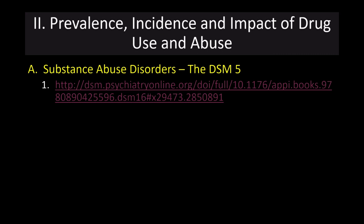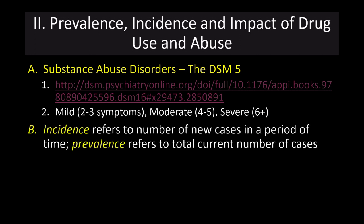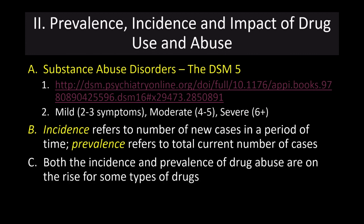You can take a look at the entire criteria at the provided link. There are different levels of substance abuse disorders — mild to moderate to severe — depending on the number of symptoms you have, including impacts in social life, relationships, and job. When talking about substance abuse disorders, we have to discuss the difference between incidence and prevalence. Incidence refers to the number of new cases in a period of time, while prevalence refers to the total number of cases. Both are on the rise for some drugs, particularly opioids and synthetic opioids.